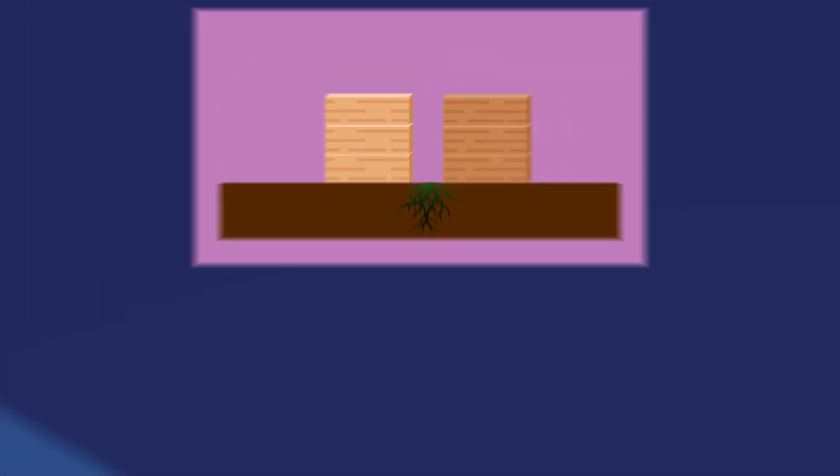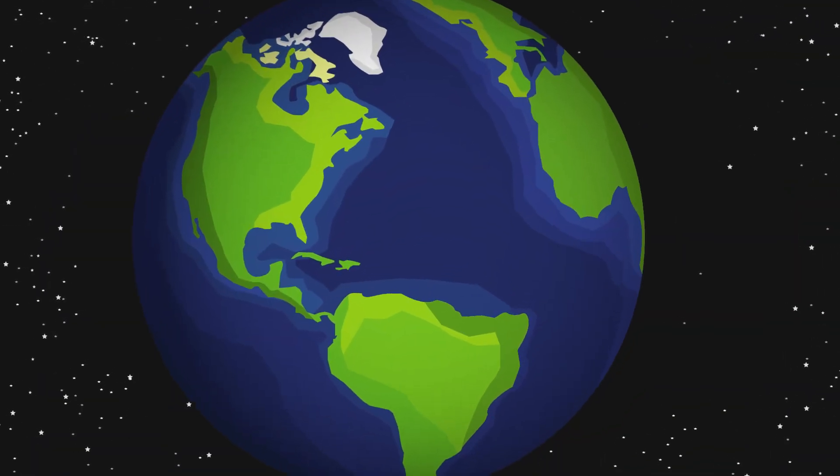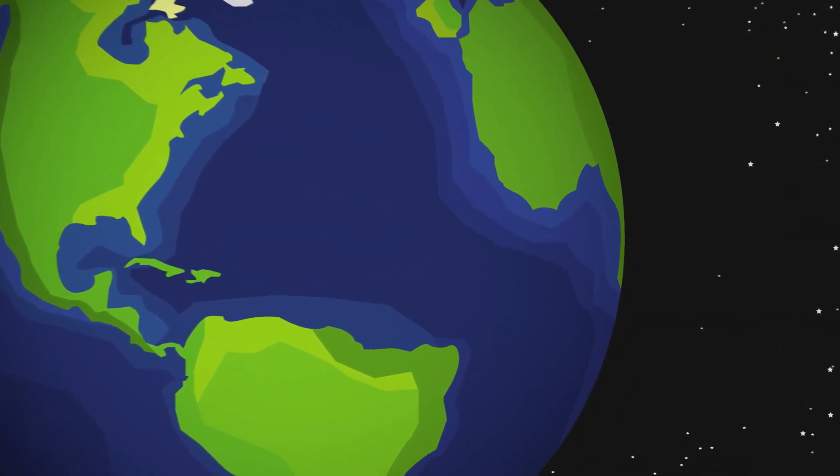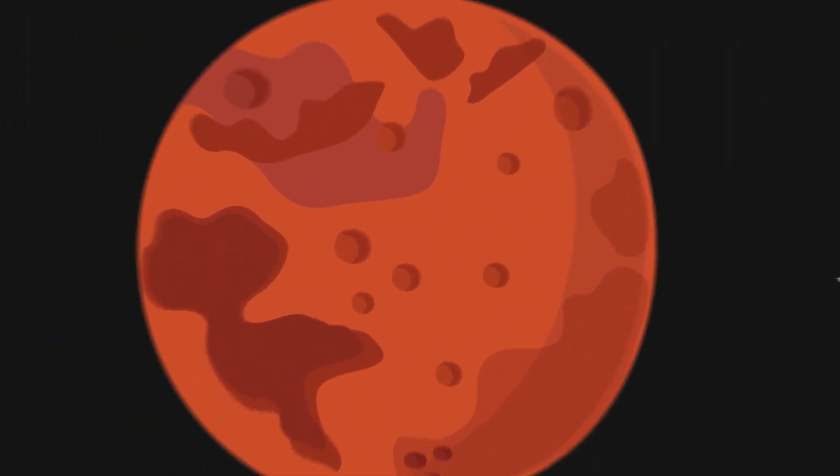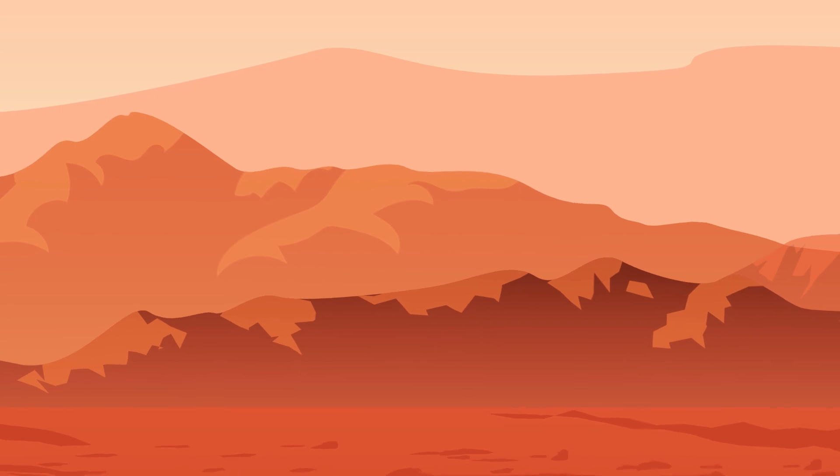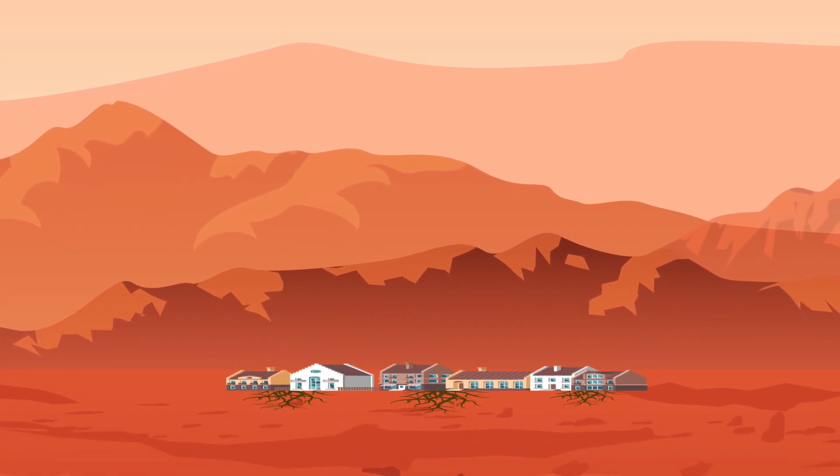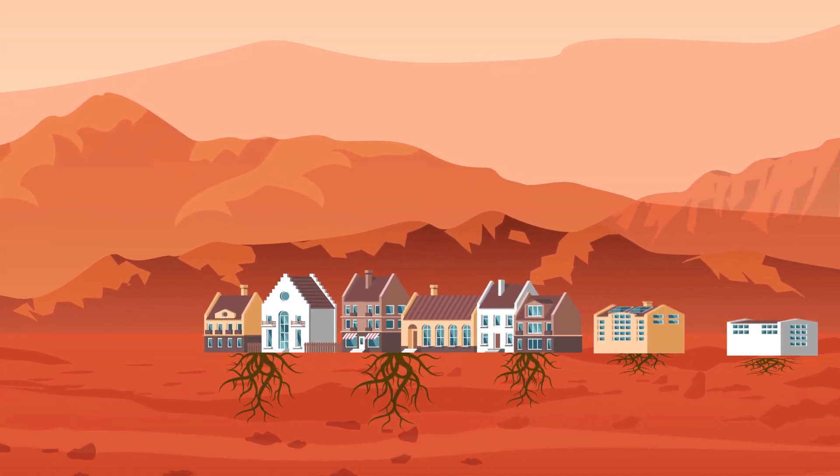And then if you take this a step further and say, what are some other remote places we might want to eventually produce materials? If we ever decide to live on Mars, there's no Home Depot up there. We're going to have to be able to grow infrastructure.